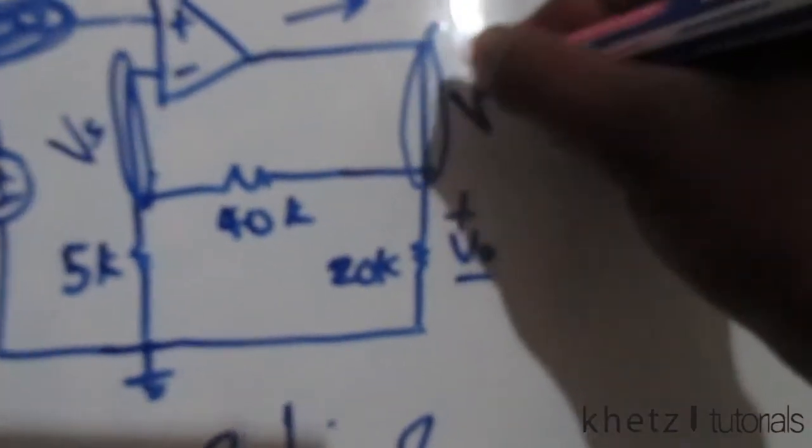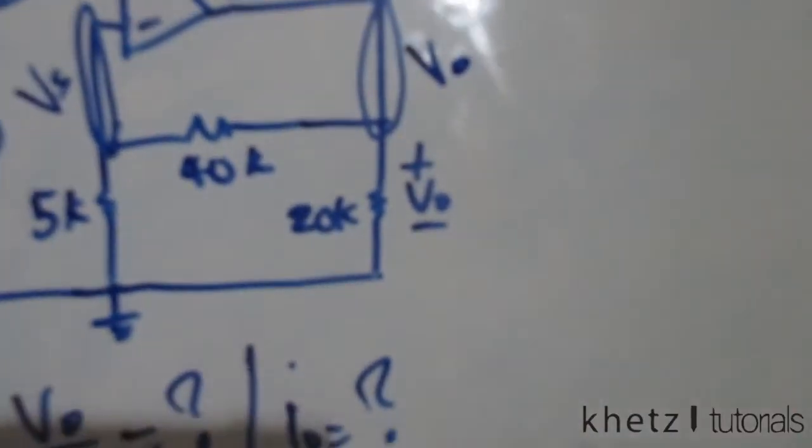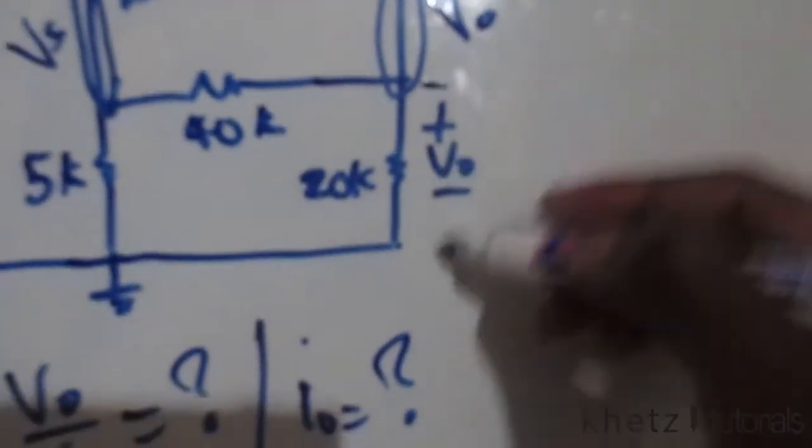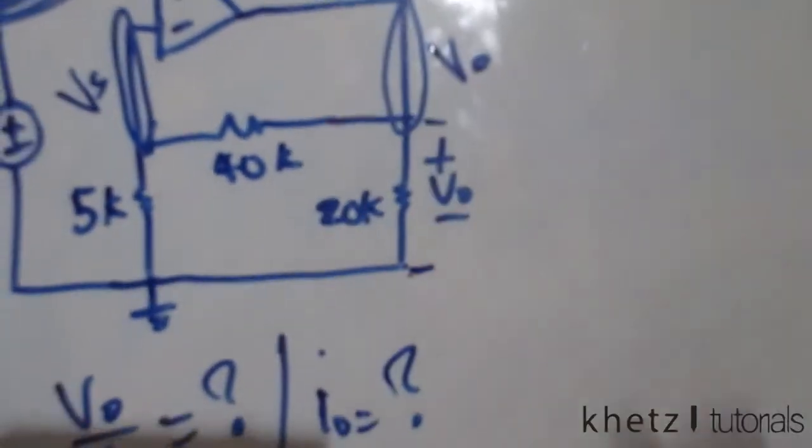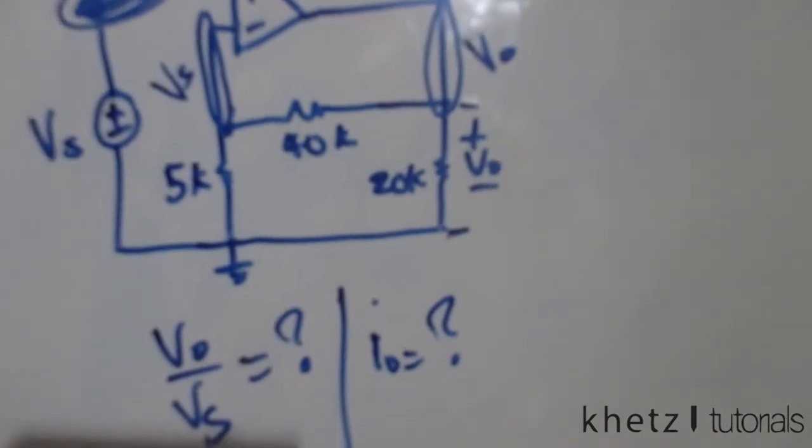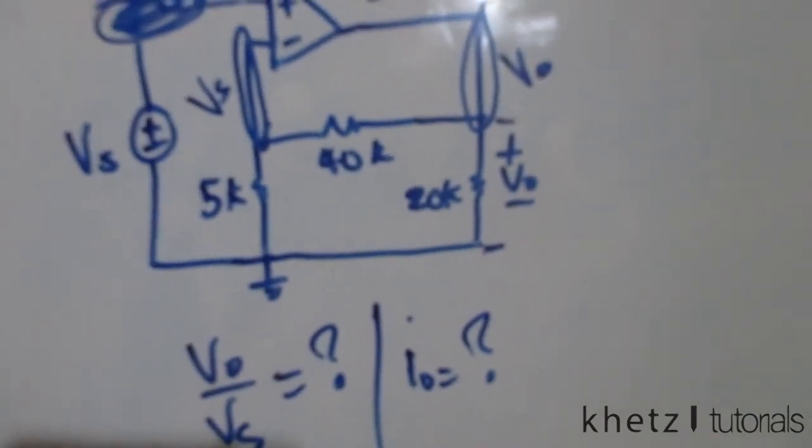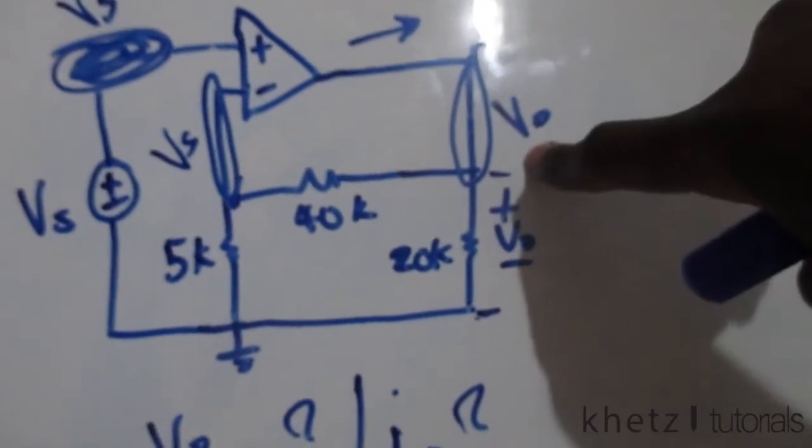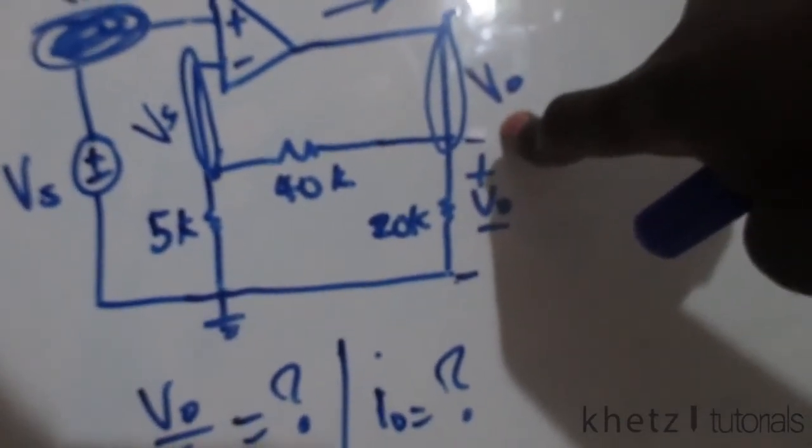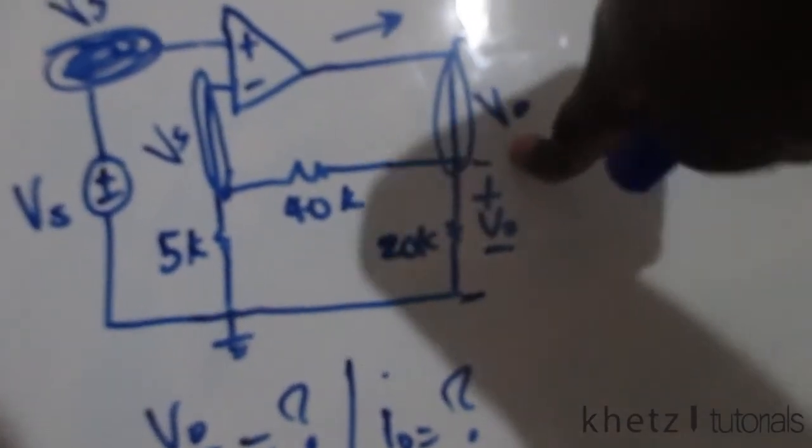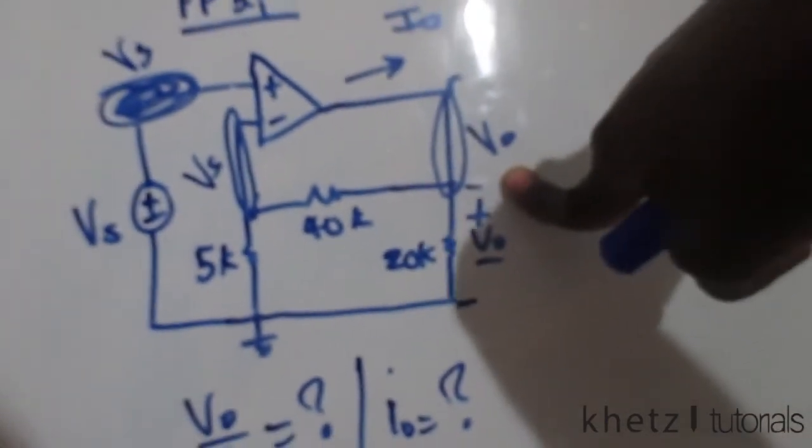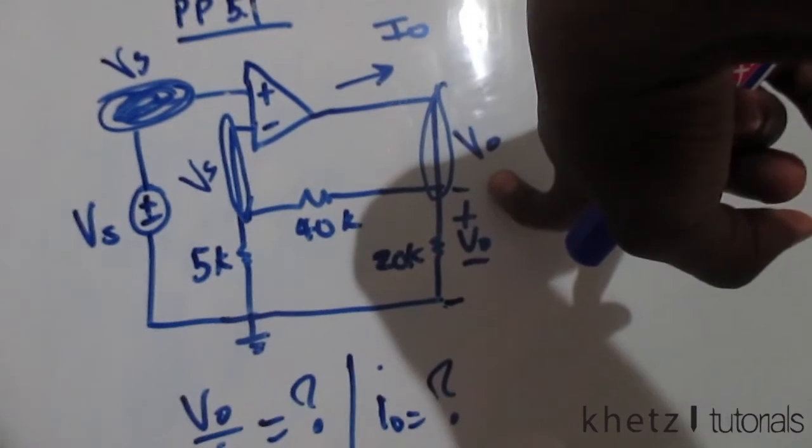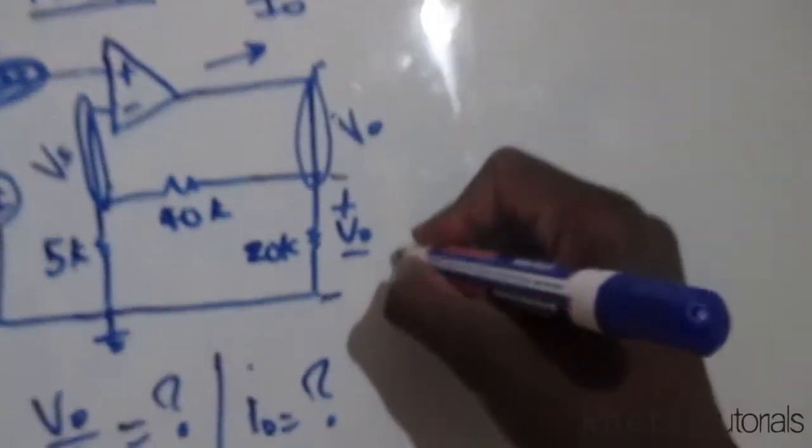We have vo indicated from that point to ground, which means this top node has the same value as the voltage which is across this particular resistor. Now let's do some nodal analysis at this node using the value of vs which is given to us to calculate the second part of the question.